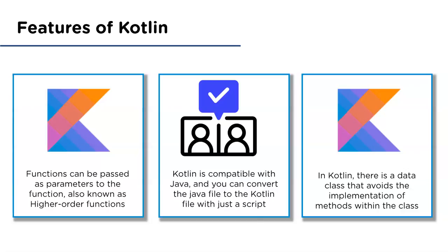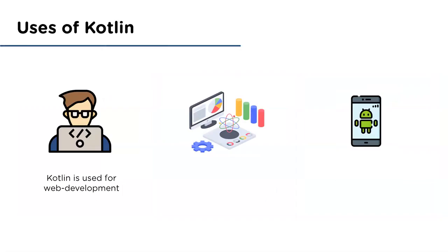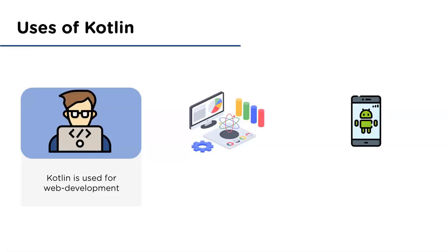Now coming to the uses of Kotlin. Kotlin is used in web development — it is compatible with Java and much easier to work with. Kotlin also works well with Spring and other frameworks, making it an easy replacement for Java when it comes to web development.